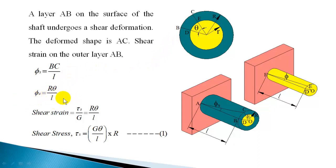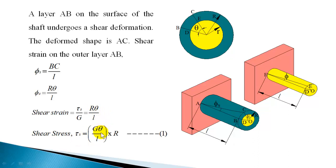Now phi_S is R*theta/L, and phi_S is a shear strain. You can use Hooke's law to replace shear strain in terms of shear stress. Within the elastic limit, shear strain equals the ratio of shear stress to modulus of rigidity. So shear strain = tau/G. Writing tau_S to represent shear stress on the surface: tau_S/G = R*theta/L. Rearranging, shear stress = G*theta/L * R. That is the shear stress induced on the surface of the shaft due to deformation.